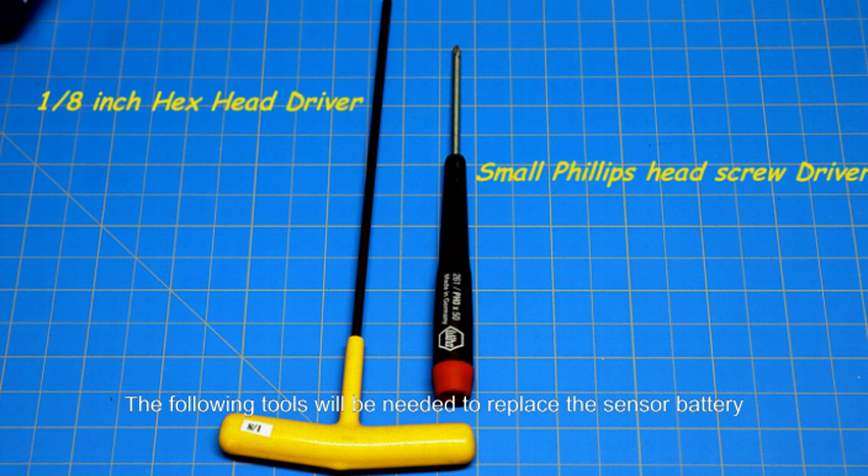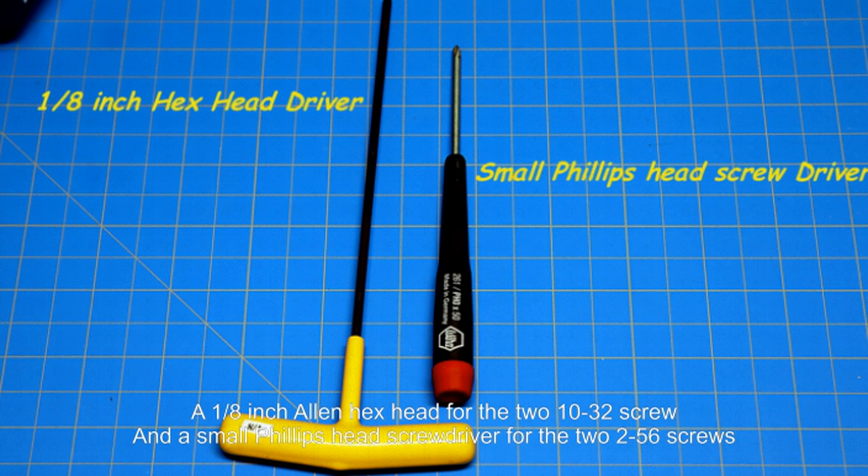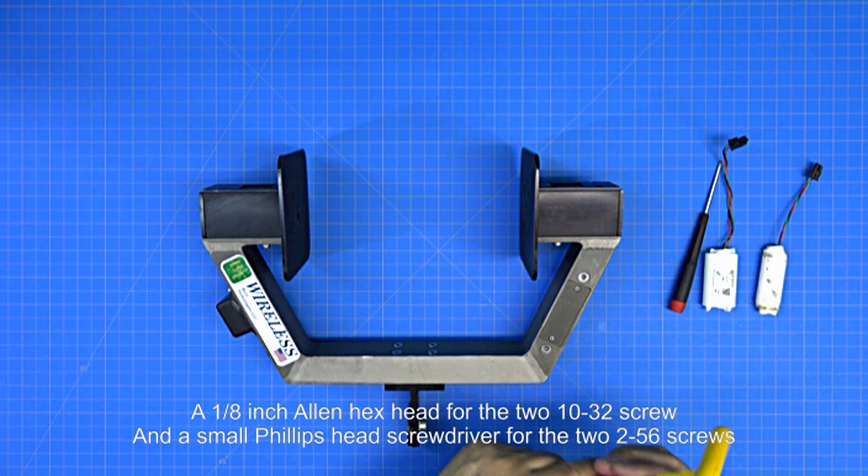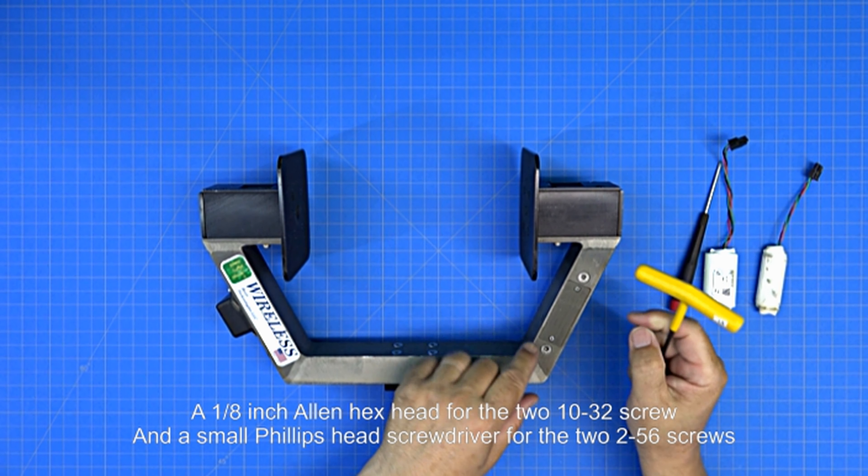The following tools will be needed to replace the sensor battery: a 1/8 inch Allen hex head for the two 10-32 screws and a small Phillips head screwdriver for the two 2-56 screws.